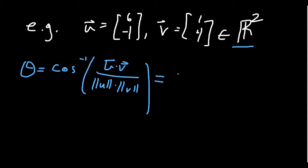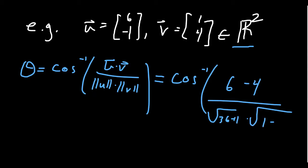And if we calculate these things, the dot product of these vectors, you're going to get 6 minus 4 on top. If we calculate the lengths of the vectors, you get the square root of 36 plus 1 for u, and you get the square root of 1 plus 16 for v.